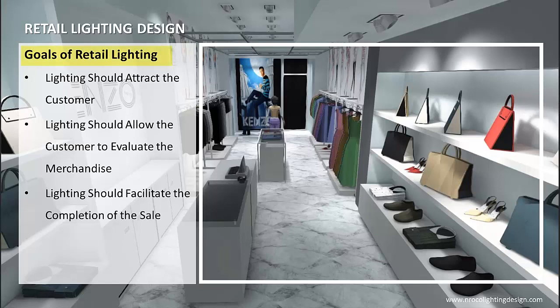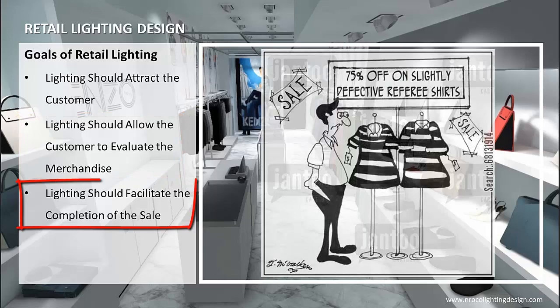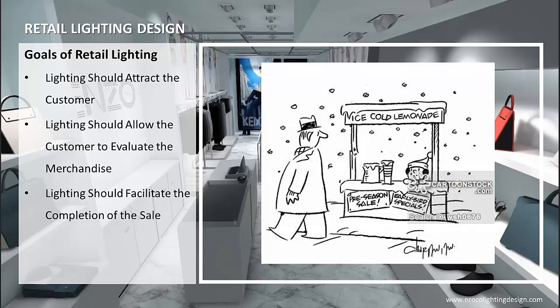There are three primary goals common in the lighting of retail areas: lighting should attract the customer, lighting should allow the customer to evaluate the merchandise, and lighting should facilitate the completion of the sale. The first goal is to attract the customer to the retail space and merchandise. Lighting creates an immediate impression of the merchandise and the appearance of the area.